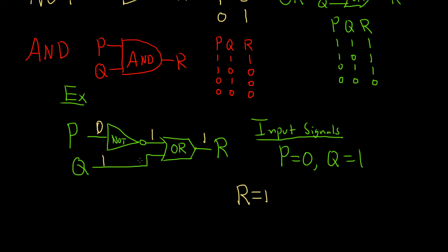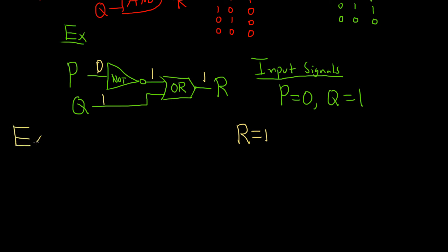You can actually write a Boolean expression for a circuit too. Let me show you how to do that. Say we have an AND gate here. And say we have a NOT gate here. And then let's say this goes to an OR gate. So now in order for this to make sense, the AND gate has to have two inputs. So let's do P, Q. And then the NOT gate has to have a single input. Let's make it Q. So make Q go into the NOT gate.